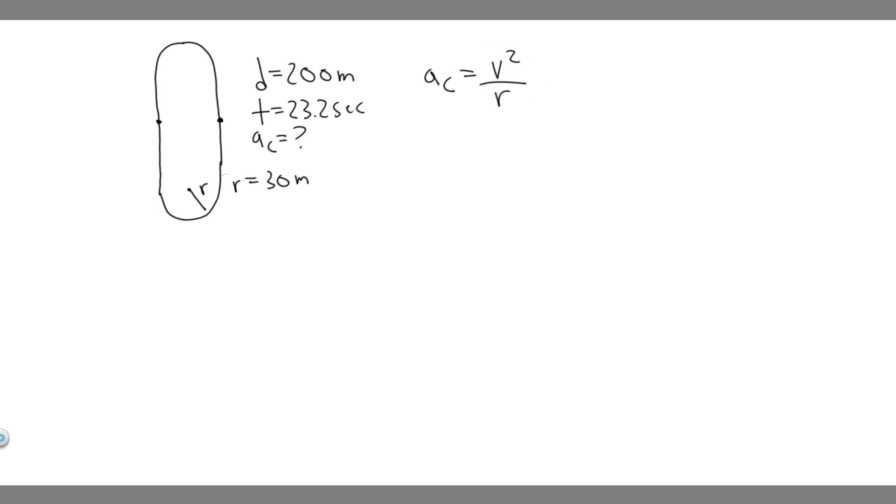But what we need is the velocity or his linear velocity when he runs around this. And we know that he's going to be running at constant speed throughout the entire time, which means his velocity here is the same here. So how do we find the velocity?